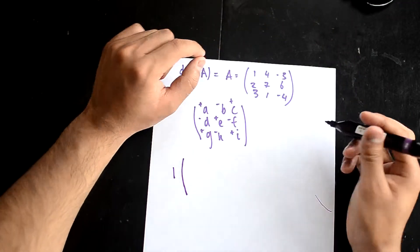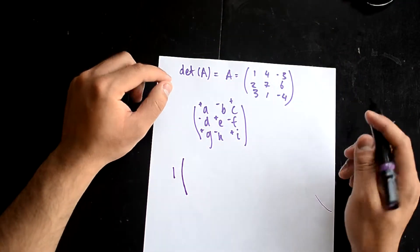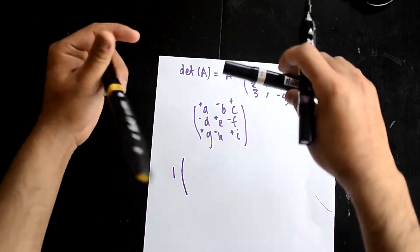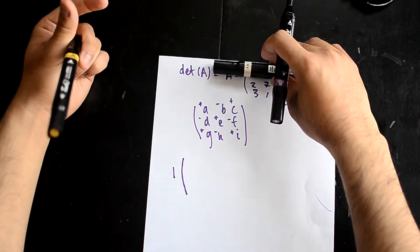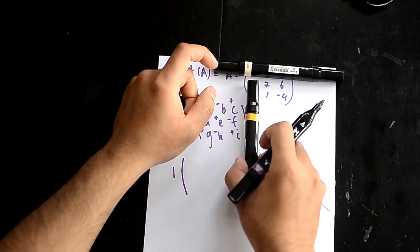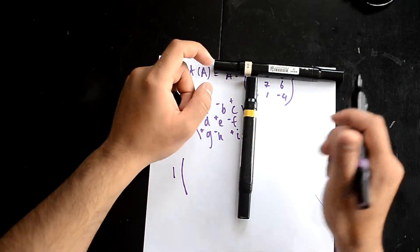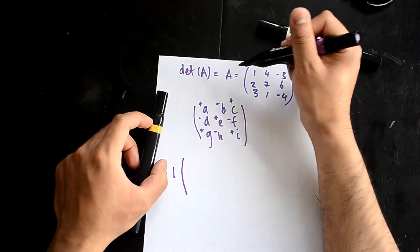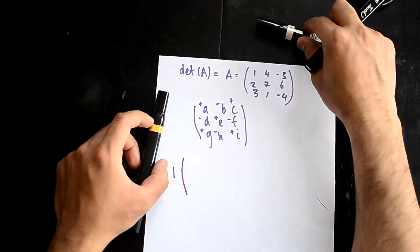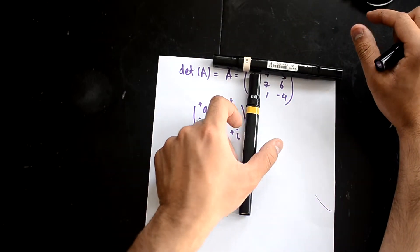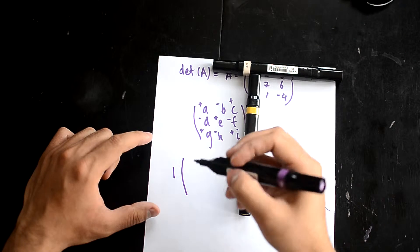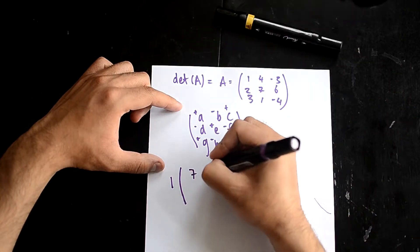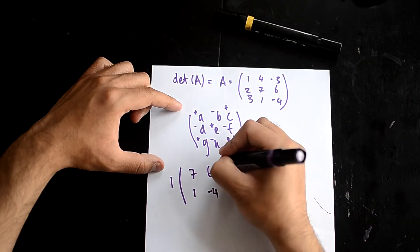Now what you're going to do is cover the row and the column corresponding to the number 1. So you cover this row and cover this column. The remaining 2x2 matrix gives you: 7, 6, 1, minus 4.